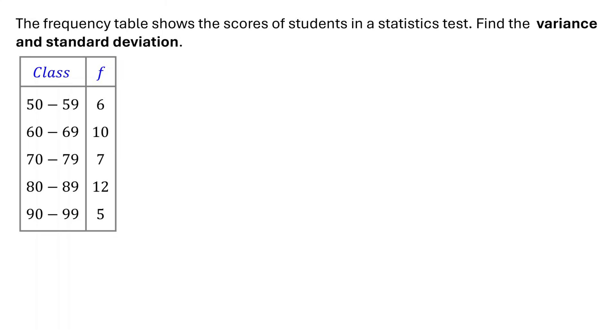The table shows the scores of students in a statistics test. The first column lists class intervals, which represent score ranges. For example, the first class represents students who scored between 50 and 59. The second column lists the frequency, which tells us how many students scored in each interval. For instance, in the 50 to 59 interval, the frequency is 6. This means that 6 students scored between 50 and 59.